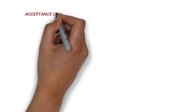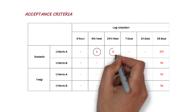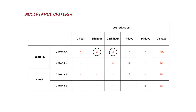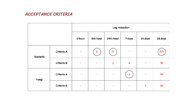The acceptance criteria differ with the type of products. For parenteral preparations, the European Pharmacopoeia recommends a 2-log reduction at 6 hours and a 3-log reduction at 24 hours for bacteria, with no recovery on the 28th day. For fungi, there should be a 2-log reduction on the 7th day and no increase in population on the 28th day. In justified cases, if the A criteria cannot be attained, the B criteria must be satisfied.